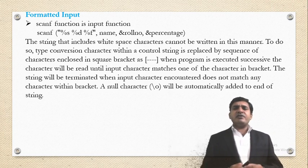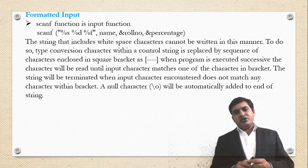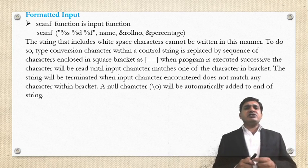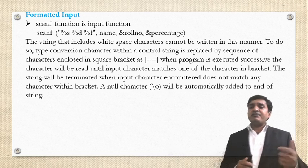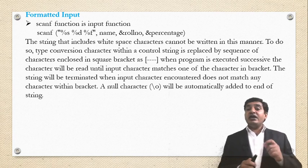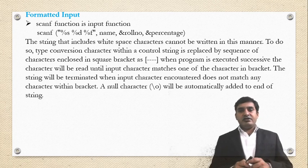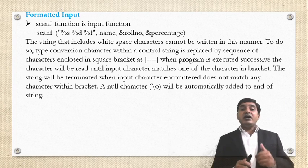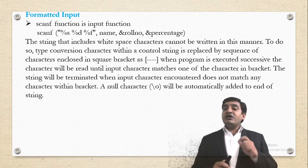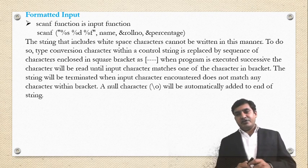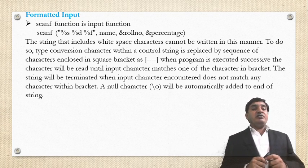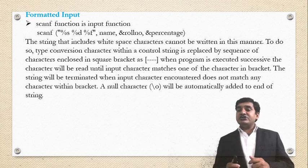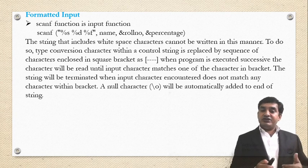A string that includes a white space character cannot be read using scanf in the normal manner. To handle this, the type conversion character within the control string is replaced by a sequence of characters enclosed in square brackets. When the program is executed, successive characters will be read until the input character matches one of the characters in the bracket. The string will be terminated when the input character does not match any character within the bracket. A null character '\0' will be automatically added to the end of the string.